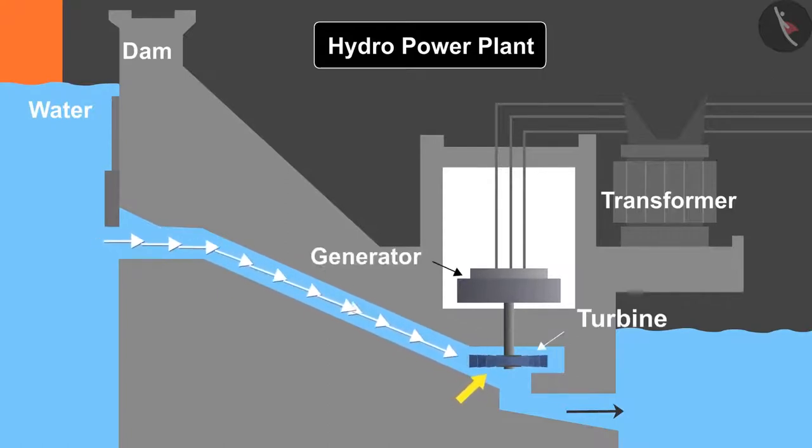The turbine is then connected to the shaft of the generator. Generator converts the mechanical energy from turbine to electrical energy. This is then sent forward with the help of transmission lines.